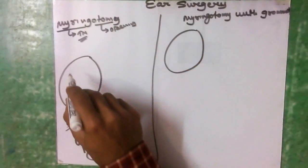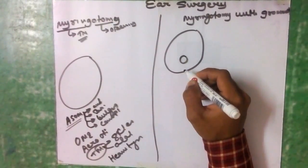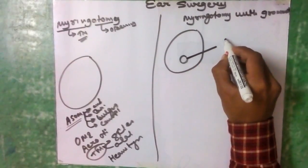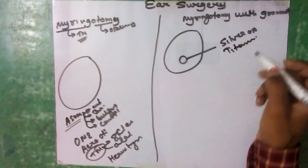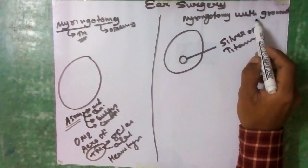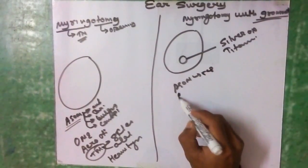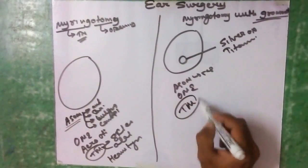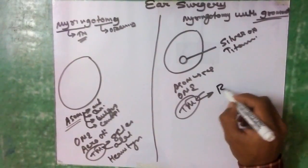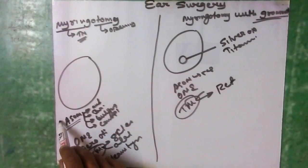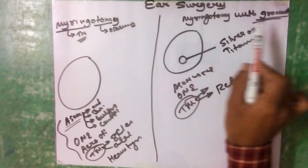If the condition recurs or enters a chronic phase, a tympanostomy tube — also known as a grommet — is inserted into the opening. The grommet is made of silver oxide or titanium. Grommets are used when ASOM is recurrent, in otitis media with effusion, or in tympanic membrane abnormalities like tympanosclerosis, atelectasis, or retraction pocket. The indications are the same as myringotomy but in the chronic phase we prefer myringotomy with grommet insertion.